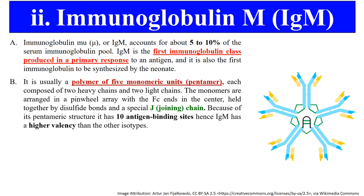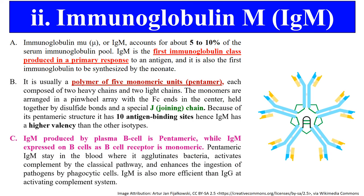In the case of B cells, the IgM produced by plasma B cells is pentameric in structure — as you can see in the diagram, five IgM antibody molecules are joined with each other forming the pentameric structure. However, the IgM antibody present on the receptor of the B cell exists as a monomer.